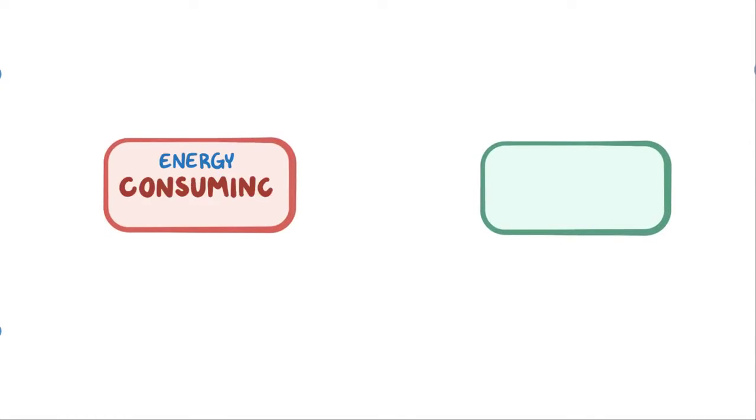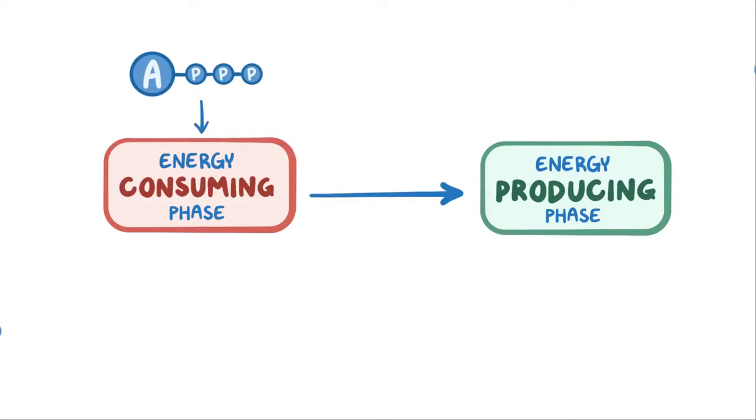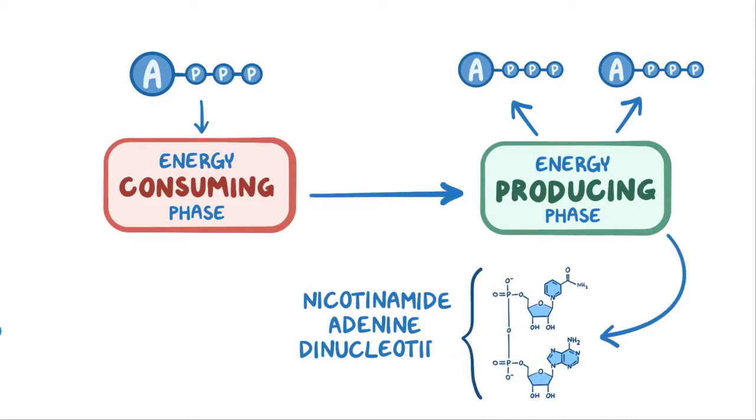Glycolysis can be divided into two phases: an energy-consuming phase and an energy-producing phase. It's like a business investment - the cell needs to spend some energy before it can start making energy, and like any good investment the cell gets more energy back than it puts in. The energy-consuming phase requires ATP, and the energy-producing phase generates ATP, as well as other molecules like reduced nicotinamide adenine dinucleotide, or NADH, which can be used to make ATP. We can keep track of all of this using an energy counter.